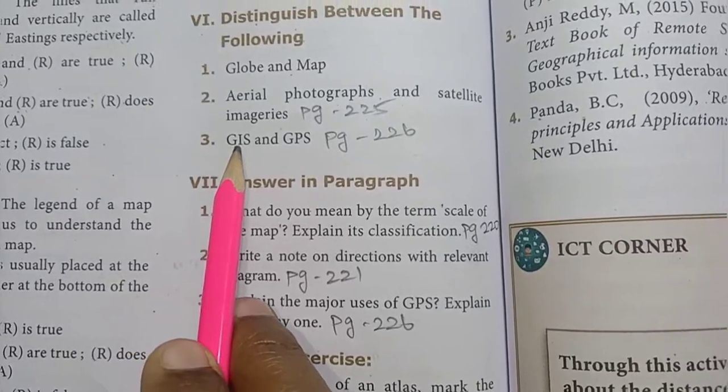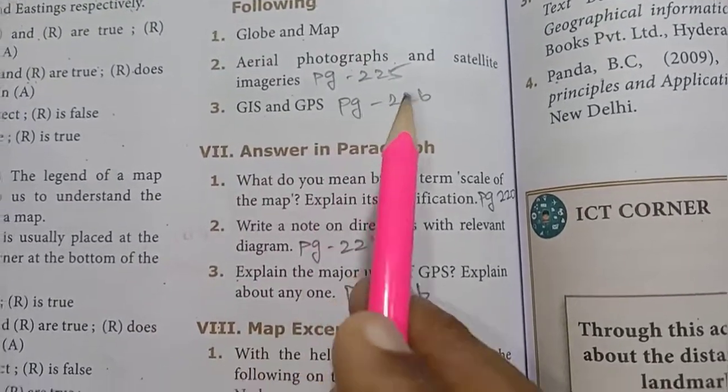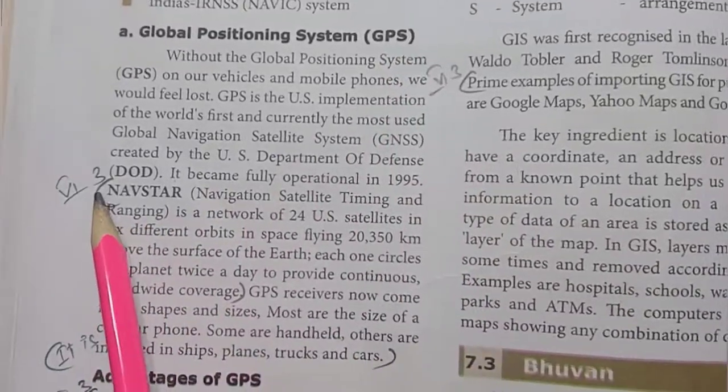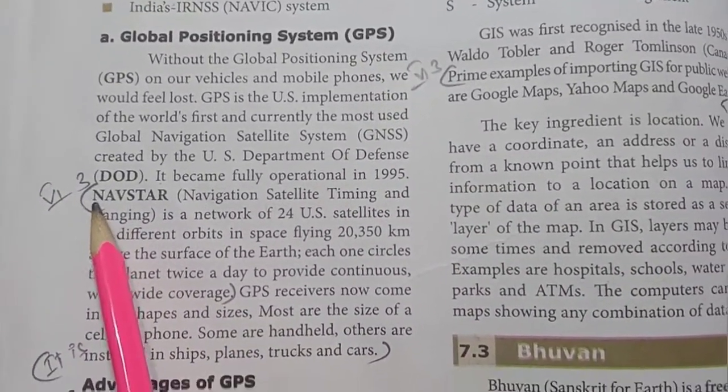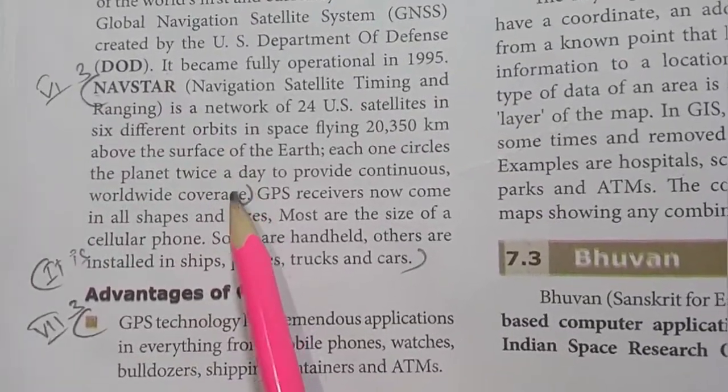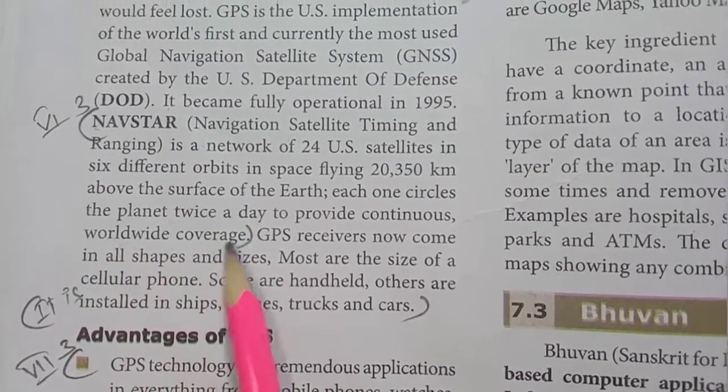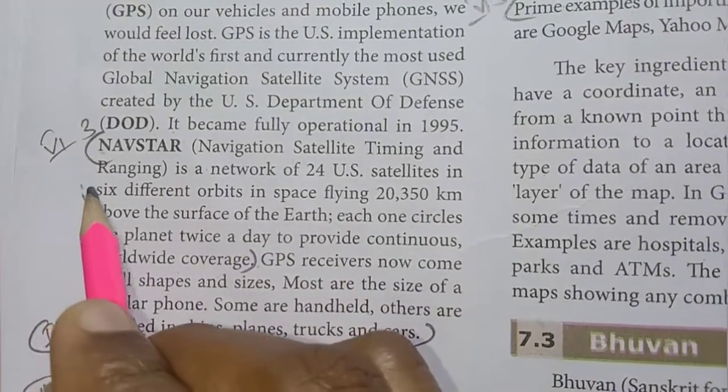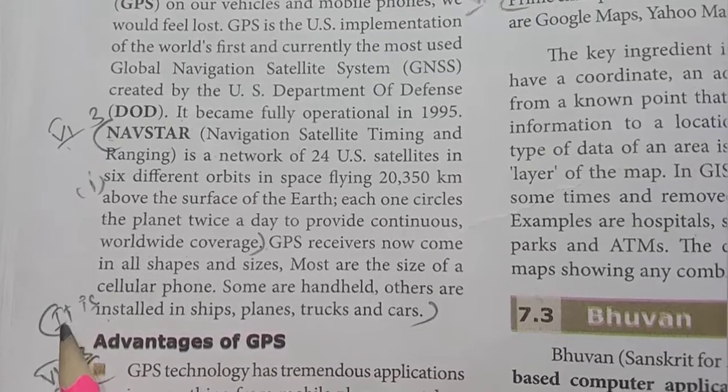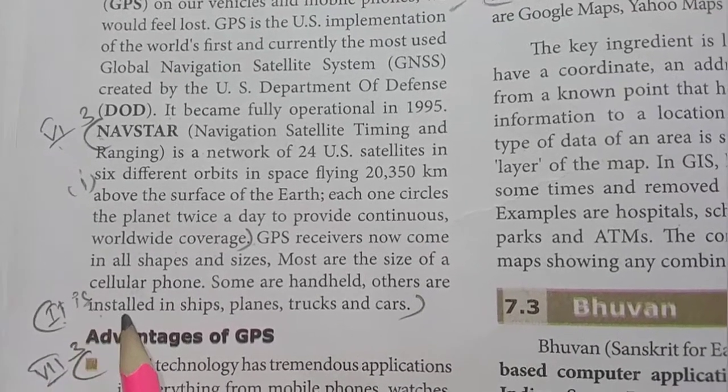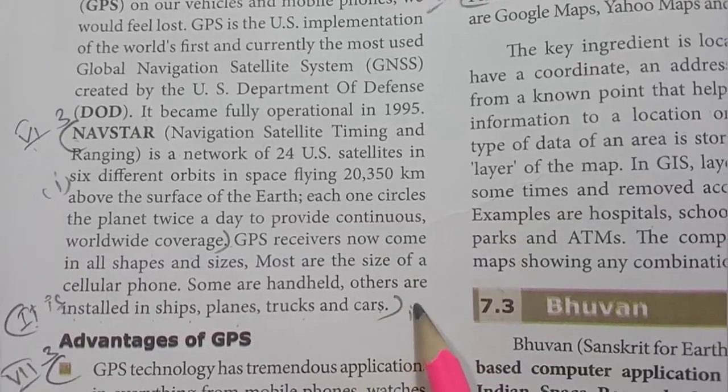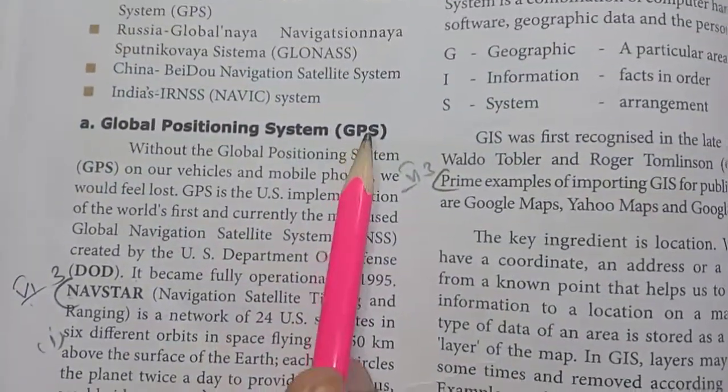Third one, GIS and GPS. Page number 226. First GPS. In bold letters, that is the start. One, two, three, four, five, six lines. The line is worldwide coverage, that is the first point. Sixth Roman numeral, third one, first point. Second point: it is installed in ships, planes, trucks and cars. This is the second point, this is the GPS.